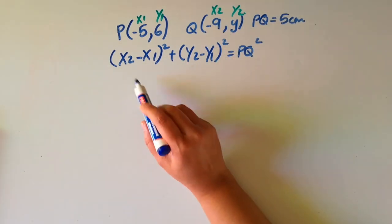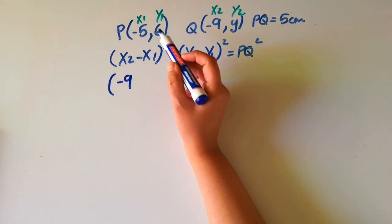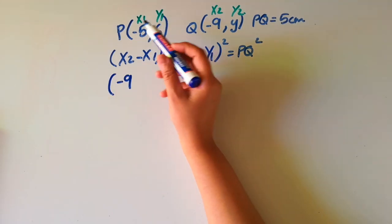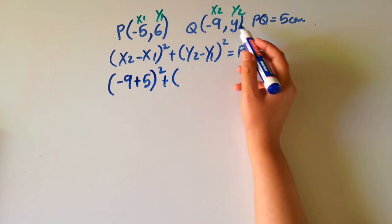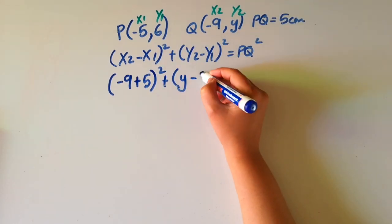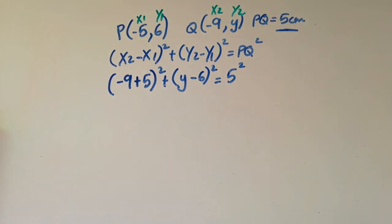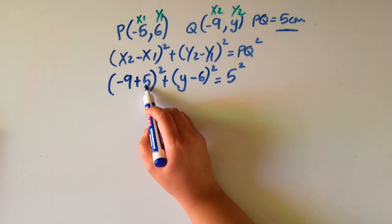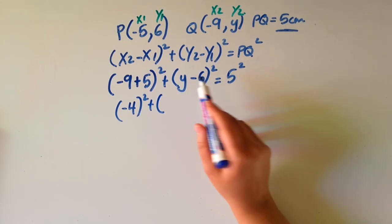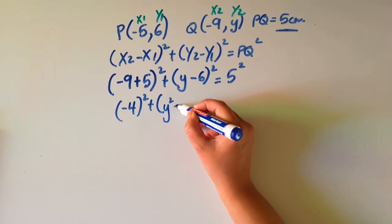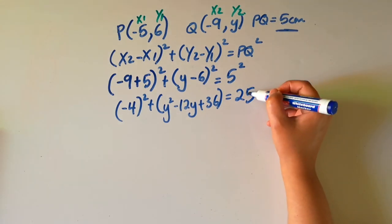Now let's substitute these points into our formula. So x2 is equal to minus 9, and x1 is equal to minus 5, so that would be minus minus 5 will give me plus 5, squared, plus y2 is equal to y minus y1 is equal to 6, squared, will give me PQ squared. PQ, as we know, is equal to 5 centimeters. Minus 9 plus 5 will give you minus 4 squared, plus y minus 6 squared. That's squaring a binomial, which will give us y squared minus 12y plus 36, is equal to 25. 5 squared is equal to 25.